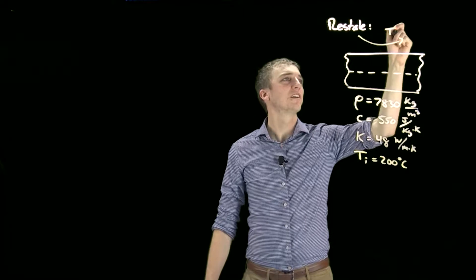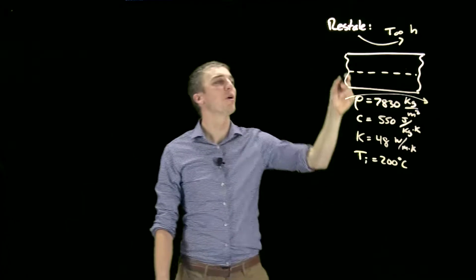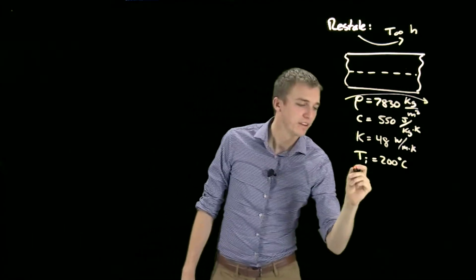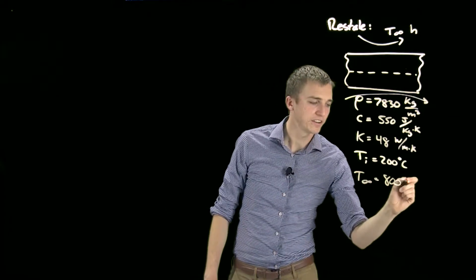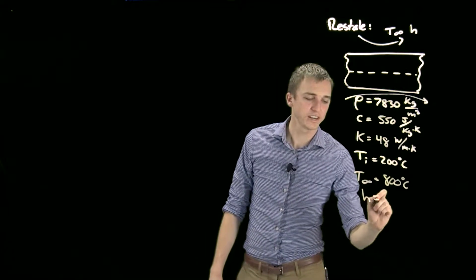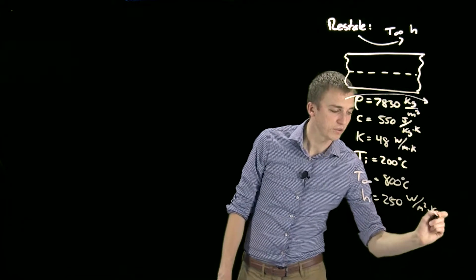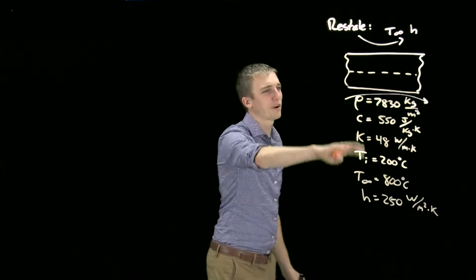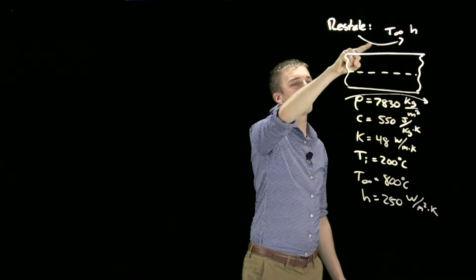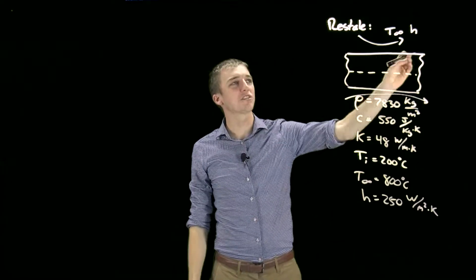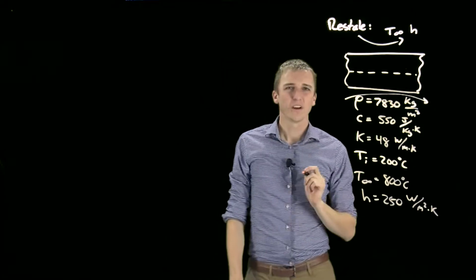This piece of steel, the slab, starts at an initial temperature of 200°C. We put it in an oven with convection on both sides, the top and the bottom, where T∞ (our oven temperature) equals 800°C, and our convection heat transfer coefficient h is a very large 250 W/(m²·K). These are all of our properties for our problem. We have a 1D slab that is being heated on both sides, so the temperature of our slab will be increasing since T∞ is larger than our initial temperature.